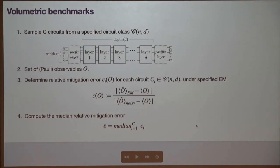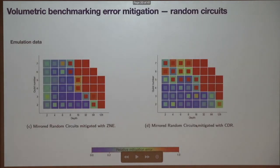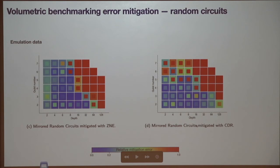We sample circuits from each of these classes, select a Pauli observable — in the case shown, a global observable — and determine how much the approximation error in the noisy expectation value improves with error mitigation methods, looking at the median value over all sample circuits. This is emulation data using a noisy classical simulation, where the noise model combines depolarizing errors corresponding to specific devices, as well as thermal relaxation and readout errors.